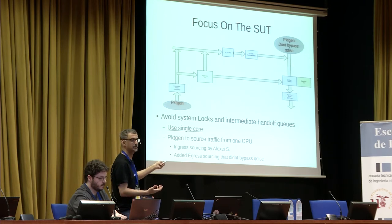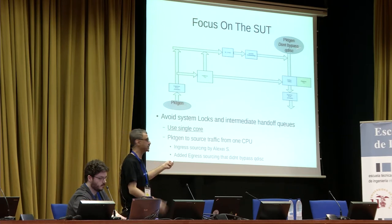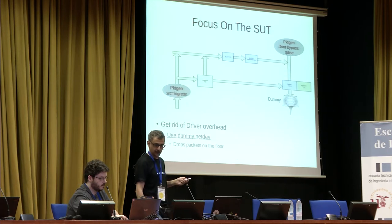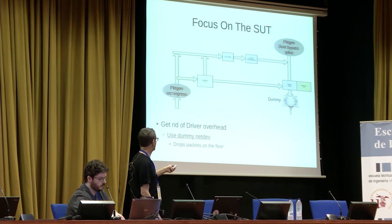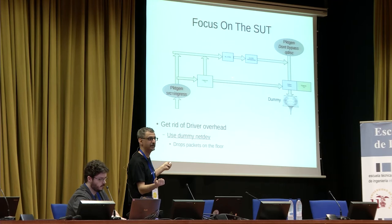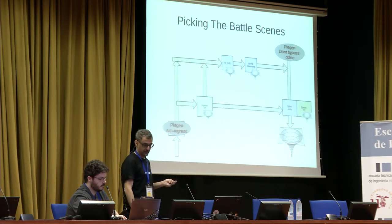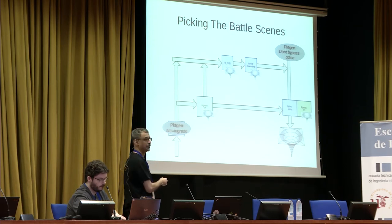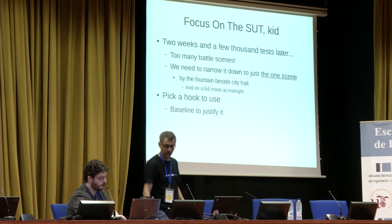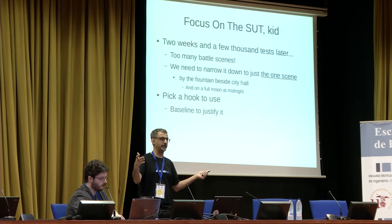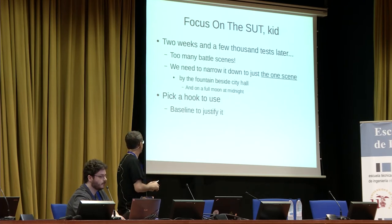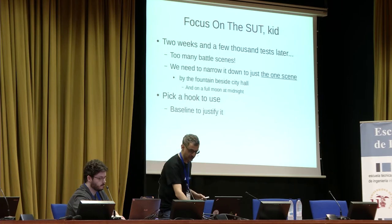We were going to send packets from packet gen, but it needed to not bypass the QDisc because filters are attached to the QDisc, and the current packet gen always bypasses the QDisc. So we decided to put a dummy device on the egress — instead of a real driver it just drops the packets. On the ingress, we got rid of the driver and instead just send packets up through the ingress hook from packet gen, so it pretends it's coming from a driver without the overhead. Two weeks later we realized we had thousands of tests to run, and we needed to narrow down to just one spot — either ingress or egress.